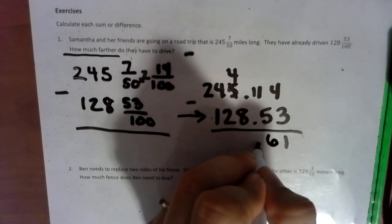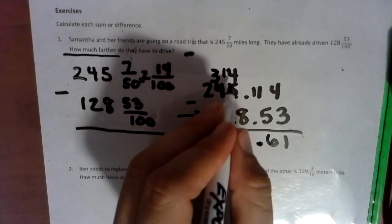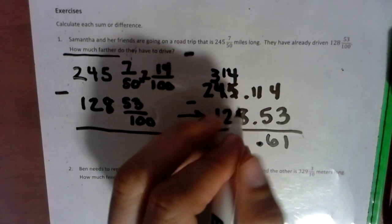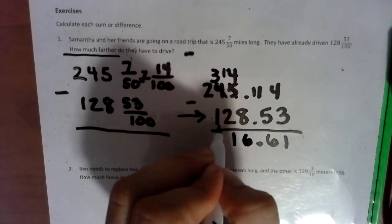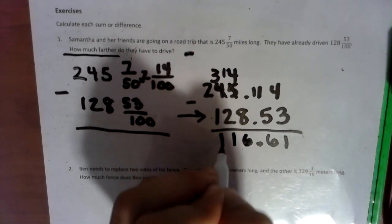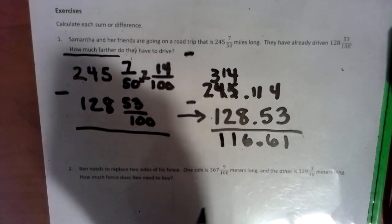11 minus 5 is 6. Decimal point. 4 cannot take 8. 4 becomes a 3. 4 becomes 14. 8 goes into the 14. We have 6 extra little pieces. 3 takes 2 by 1 and 2 takes 1 by 1. Our final answer here is 116 and 61 hundredths.